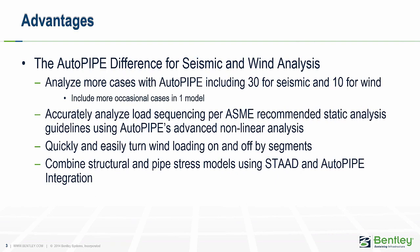Let's move on to some of the advantages of Autopipe and what makes Autopipe different from other pipe stress analysis tools. Other tools allow fewer load cases for seismic and wind compared to Autopipe, which has 30 for seismic and 10 for wind, and this allows Autopipe to analyze more occasional cases in one model. Eight seismic cases are the minimum to accurately capture all the possible seismic loadings in the positive and negative x, y, and z directions, and this is just not possible in one model in other tools.